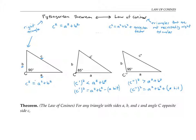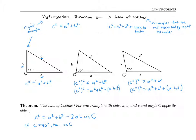The law of cosines says precisely what this correction factor is. It says that for any triangle with sides a, b, and c, and angle capital C opposite side c, c squared is equal to a squared plus b squared minus two ab cosine angle C. If angle C is equal to 90 degrees, then cosine of angle C is equal to zero, so we have that c squared is equal to a squared plus b squared — the ordinary Pythagorean theorem.